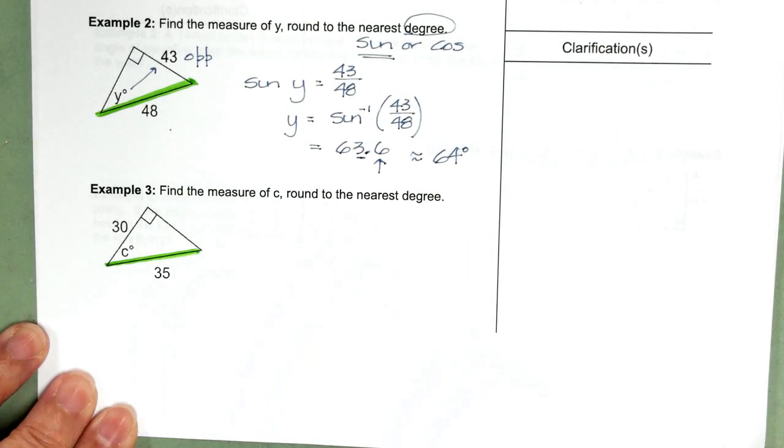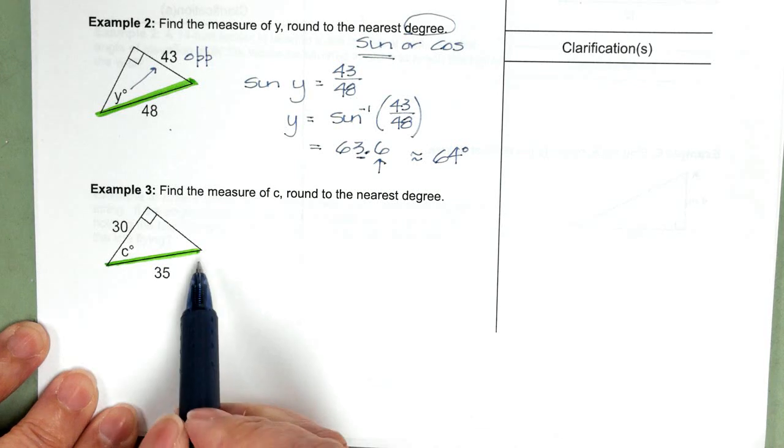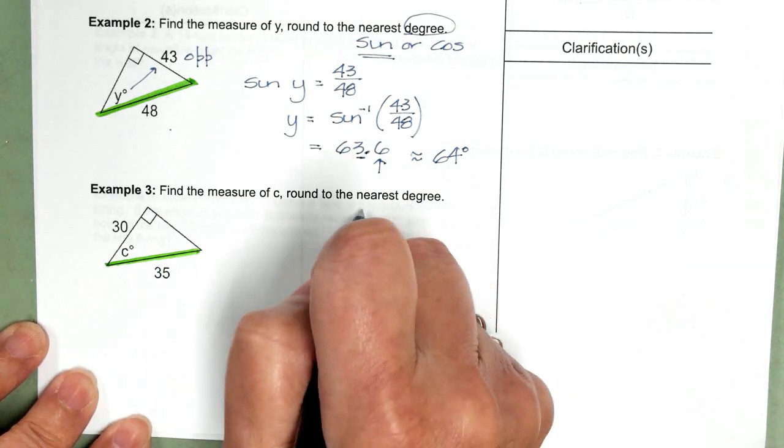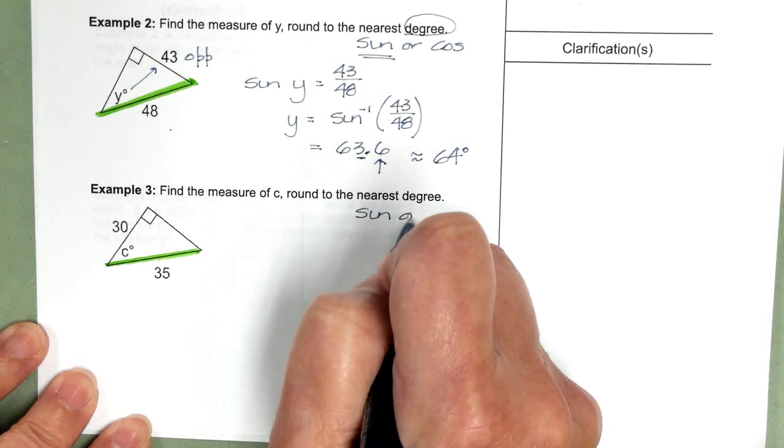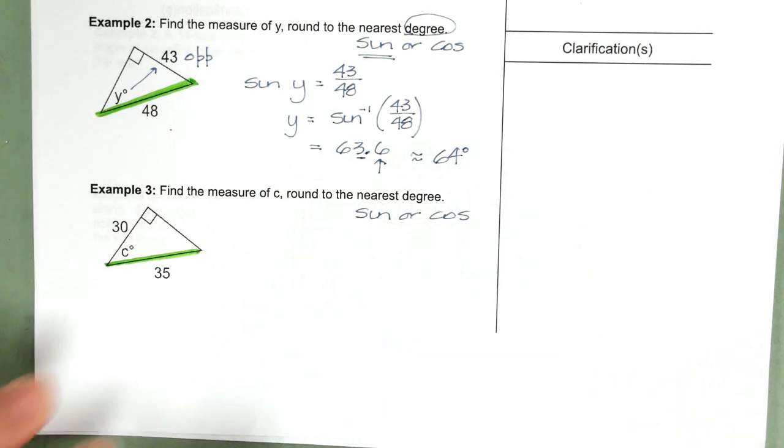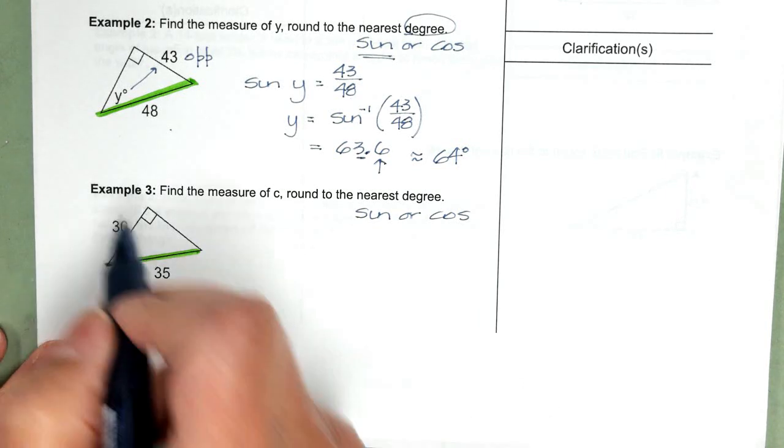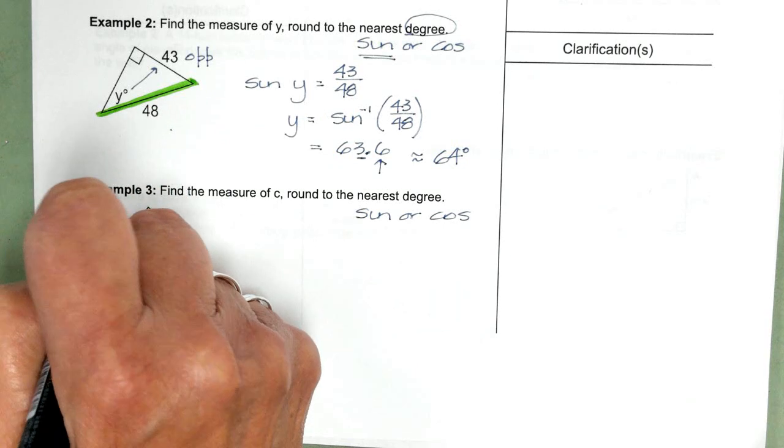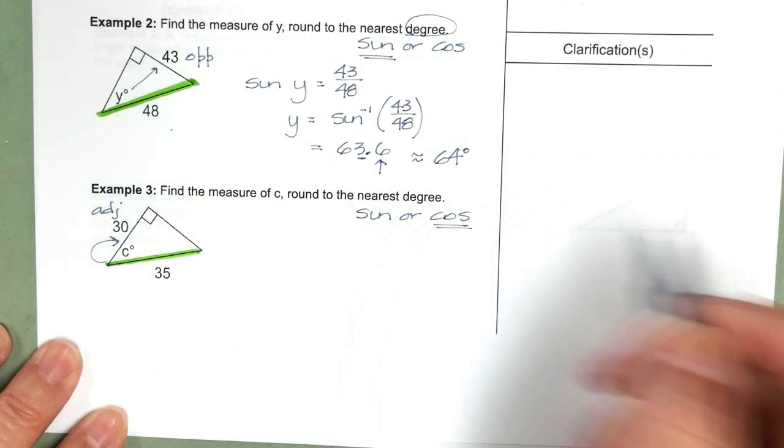For example three, again, highlighting my hypotenuse, I'm given that value. So that means I'm going to use sine or cosine. And it depends on what other side I'm given. In this case, I'm given the adjacent side, so we're going to use cosine.